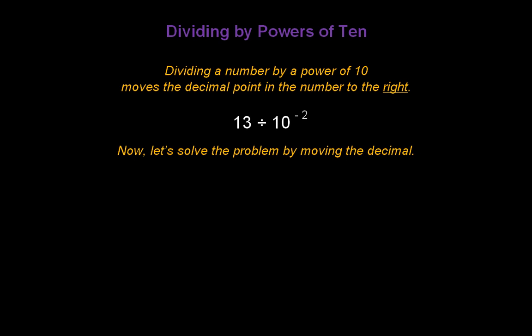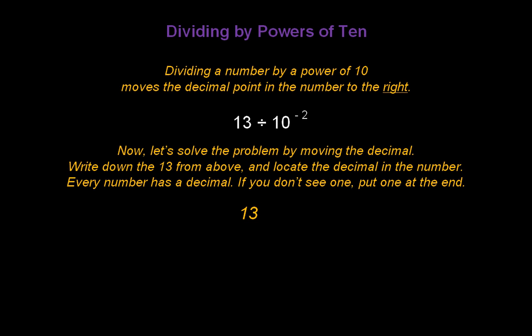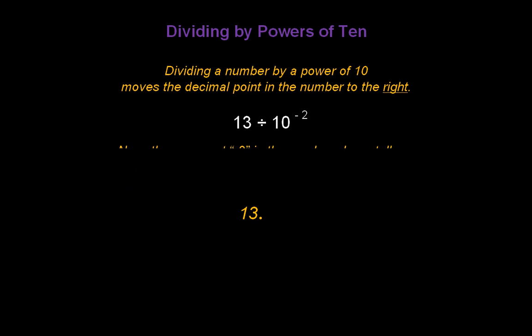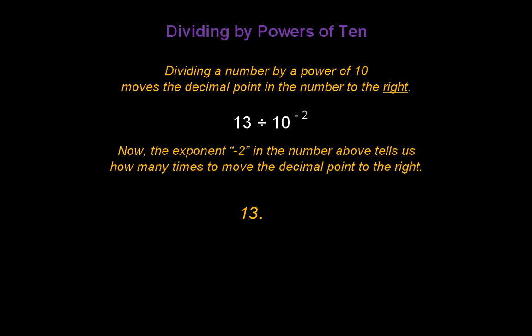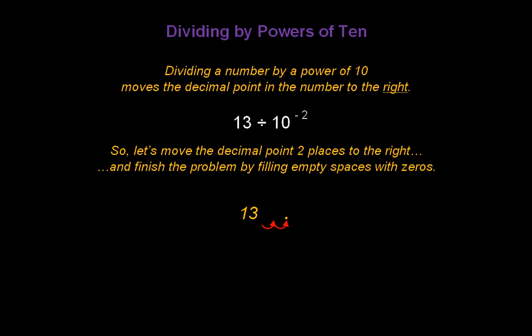Now let's solve the problem by moving the decimal. Write down the 13 from above and locate the decimal. Every number has a decimal — put one at the end because you don't see one. The exponent negative 2 tells us how many times to move the decimal point to the right. Move the decimal two places to the right: 1, 2. Finish by filling empty spaces with zeros, and we get the exact same answer: 1,300.